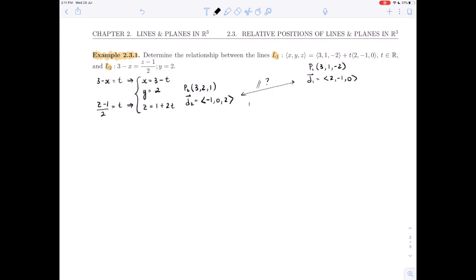In other words, is d2 some multiple of d1? And if it were, then we'd have this little system of equations. We'd have d2 is minus 1 would have to be equal to 2 times k for the x component. And 0 would have to be equal to minus 1k. And 2 would have to be equal to 0 times k or 0.